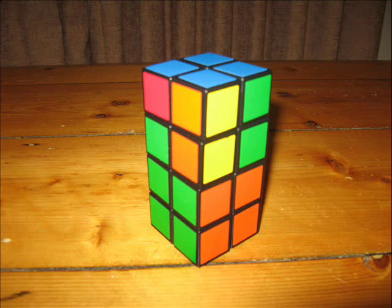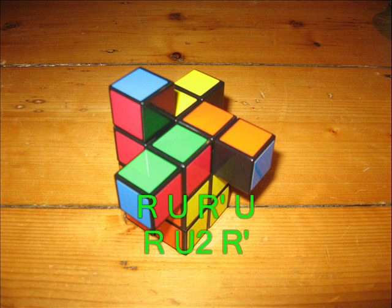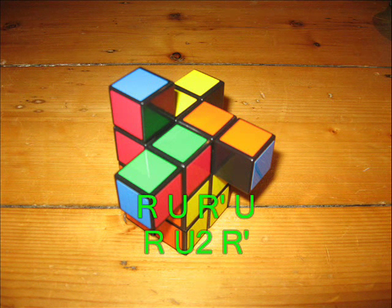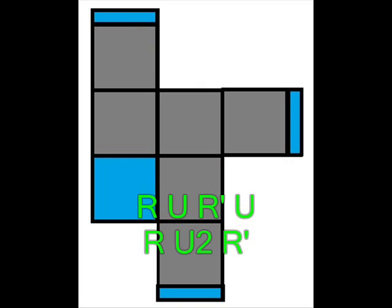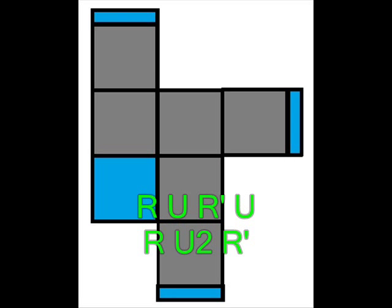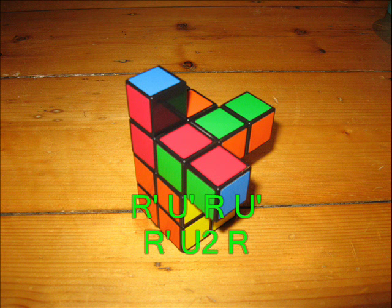Here, then, is what each orientation case looks like on the Tower Cube: Sune and Anti-Sune.